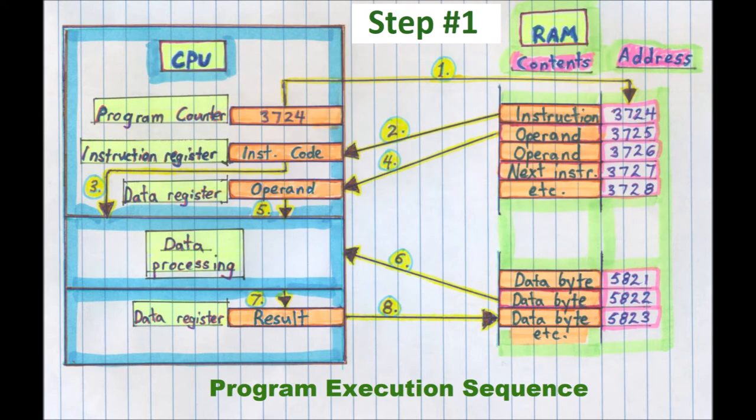First, the CPU outputs the address of the memory slot location containing the needed instruction. This address is kept in the program counter. Here, sample addresses are shown in decimal numbers. In this case, 3724.